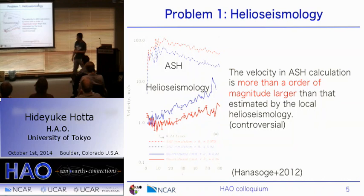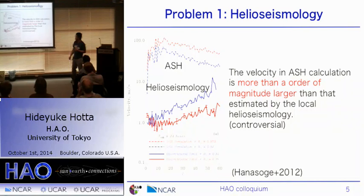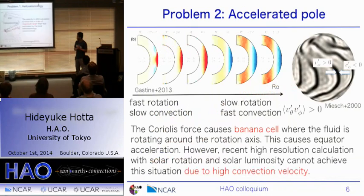In this talk I want to discuss two problems in this type of calculation. The first problem is raised by comparison with helioseismology. This is a comparison with helioseismology and the ASH code calculation. The horizontal axis denotes l, the spectral scale. This is the spectra of convective velocity — larger scale on one side and smaller scale on the other. You can see more than one order of magnitude difference between ASH and helioseismology. This is not only a problem for ASH — I also carried out global convection calculations and see almost the same spectra. All convective calculations in the global setting have this problem.